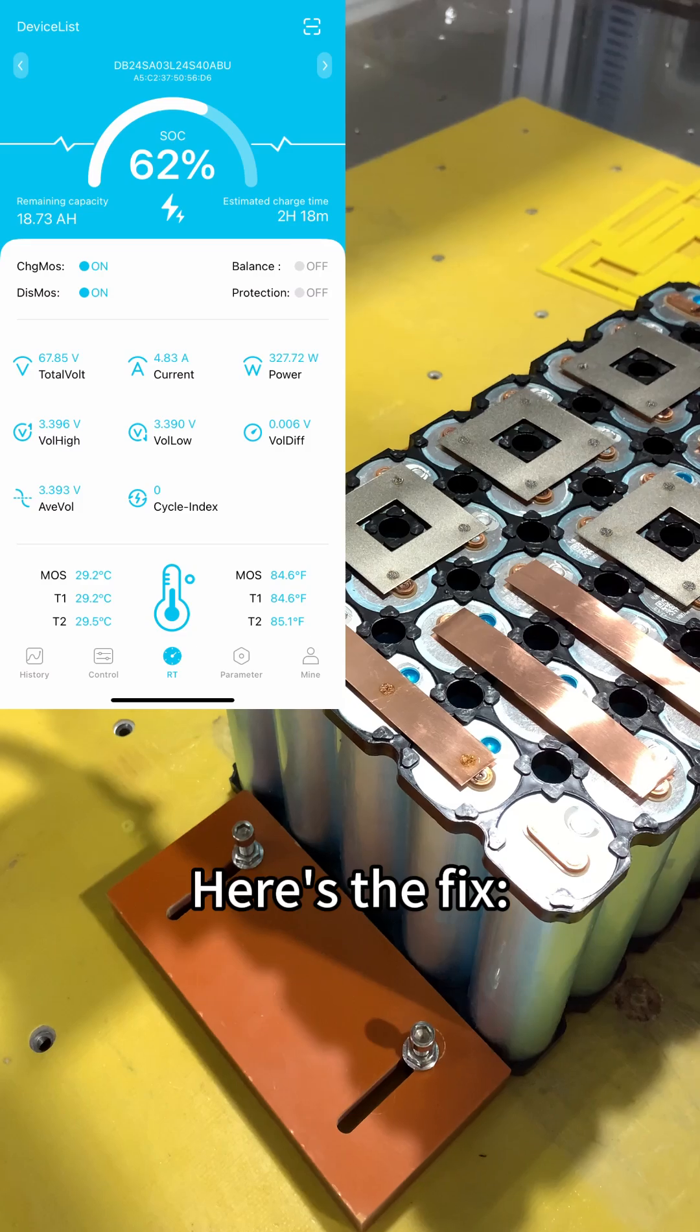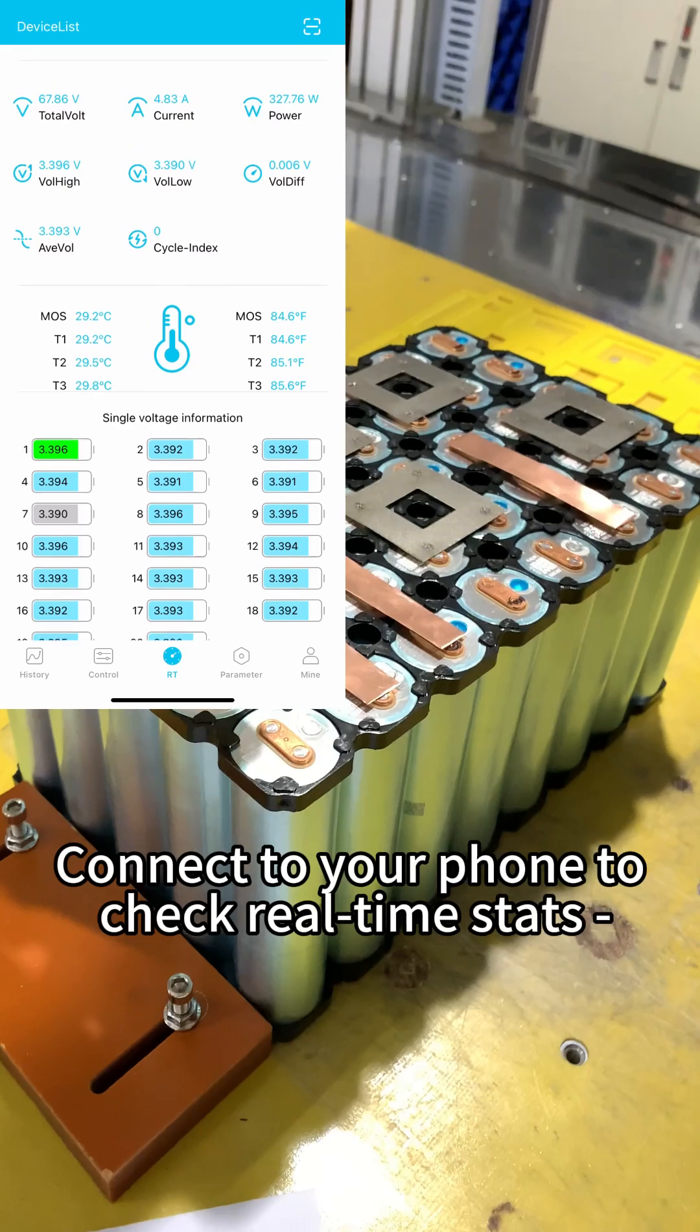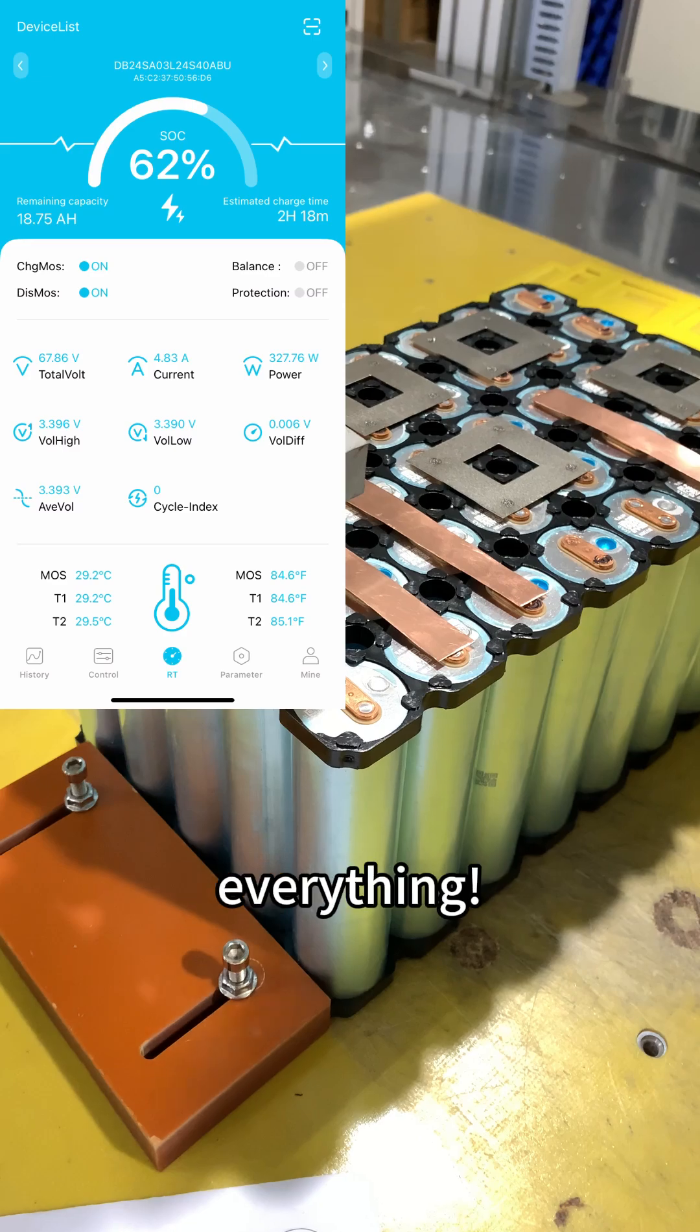Here's the fix. Use BMS with Bluetooth. Connect to your phone to check real-time stats: exact charging levels, individual cell voltages, temperature, everything.